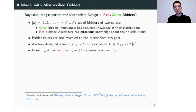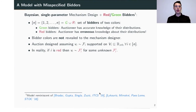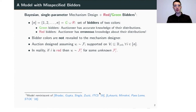Specifically, the setting we concern ourselves with is a Bayesian single-parameter mechanism design setting with an added distinction between two kinds of bidders: green and red bidders. For the green bidders, the auction designer has complete and accurate information about their distributions. For the red bidders, the designer has the wrong distributions for their valuations. The colors of the bidders are not revealed to the mechanism, and the designer doesn't know it.